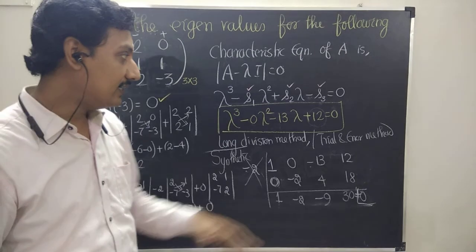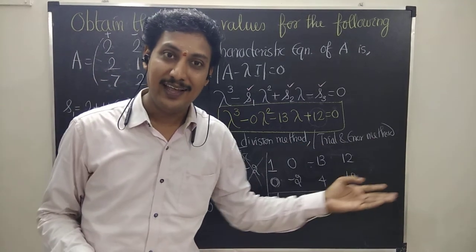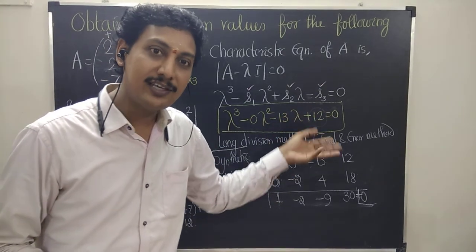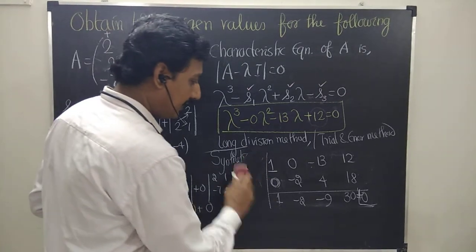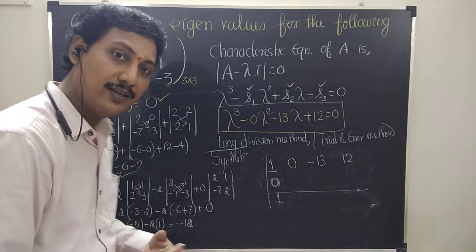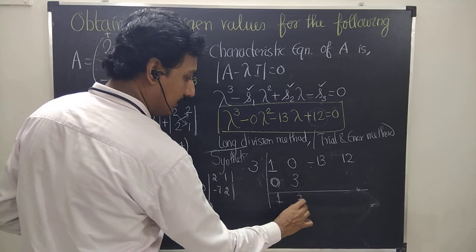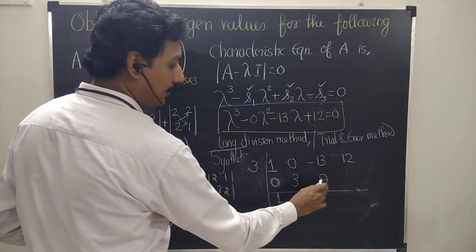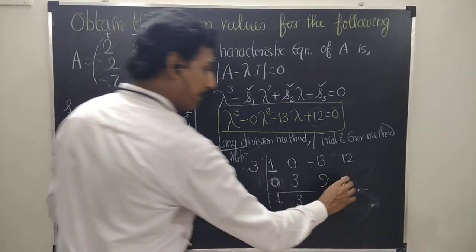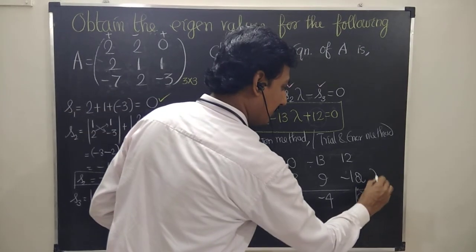I thought 12 is an even number so 2 might be a root, but that is why this is called the trial and error method — I tried plus 2, got an error; tried minus 2, got an error. So what are the other factors of 12? 3 and 4. Let's try plus 3: 1 plus 0 is 1; 1 times 3 is 3; 0 plus 3 is 3; 3 times 3 is 9; minus 13 plus 9 is minus 4; minus 4 times 3 is minus 12; 12 plus minus 12 is 0. So the first root is plus 3.